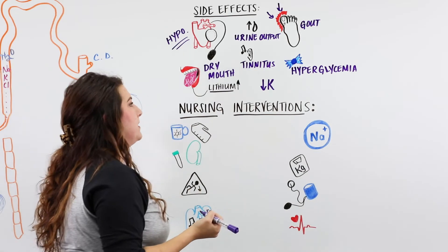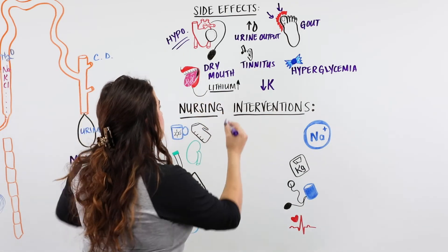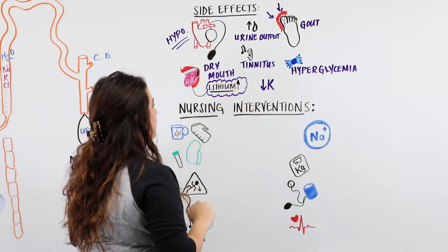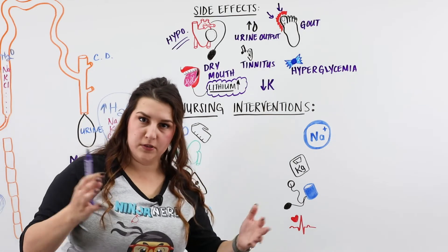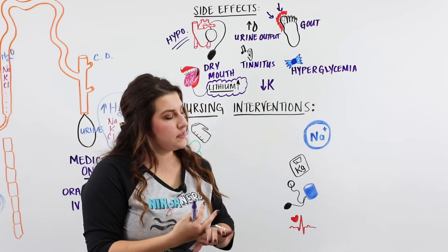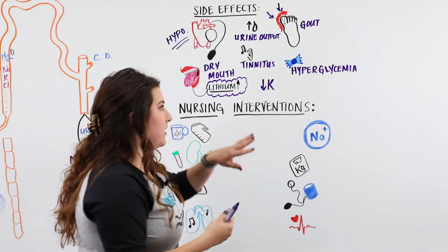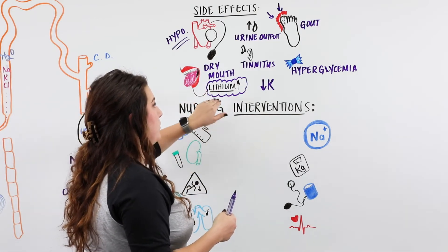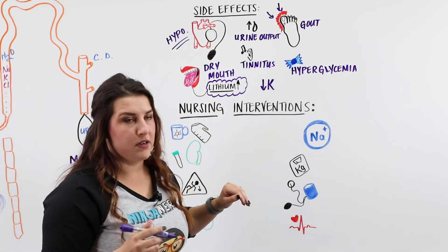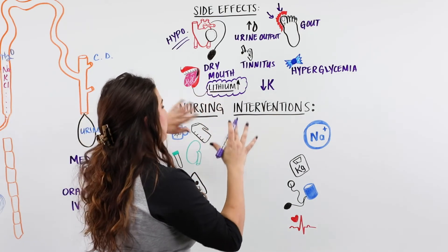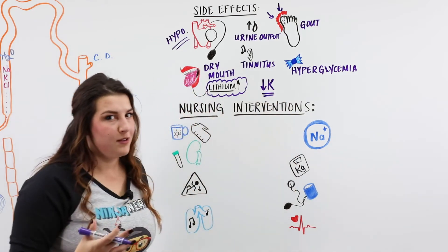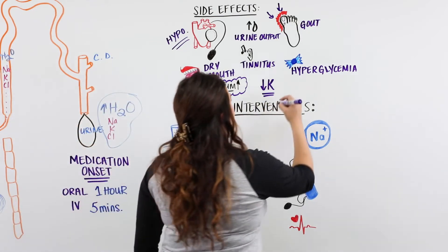Also important — and the NCLEX likes this — is lithium. When this medication is pulling sodium, potassium, and chloride down, if the patient takes lithium it may also increase lithium toxicity. The last important side effect is hypokalemia — low potassium — because we are excreting a lot of potassium in the urine.